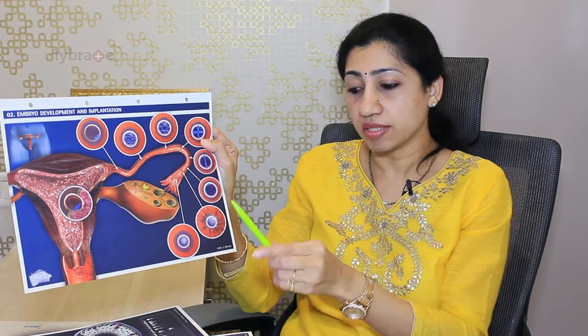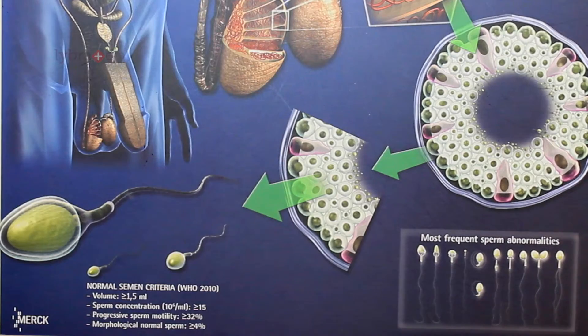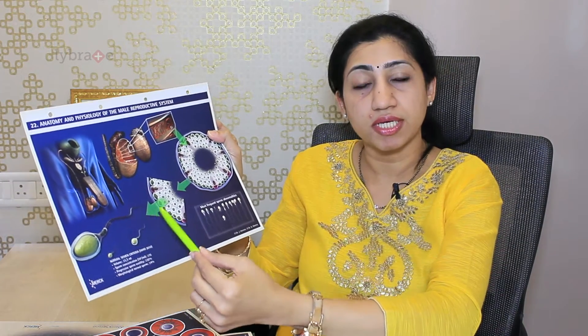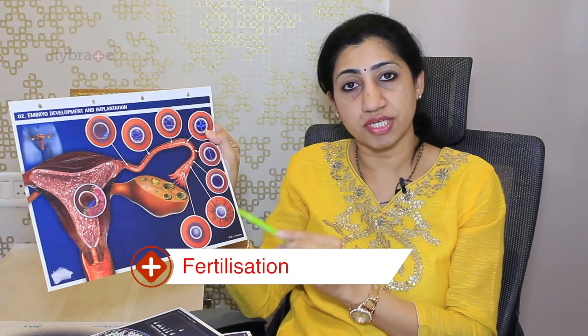The sperms move into the uterine cavity, come into the fallopian tubes, and have to reach the other part of the fallopian tube — it is at this point that the sperms reach the egg. There are certain criteria for normal semen. The volume should be at least more than 1.5 ml in the ejaculate, the sperm count should be more than 15 million per ml, and because of motility there should be active motility of at least more than 30 percent. Once the sperm enters the egg, the process is called fertilization, and the egg and sperm fuse to form an embryo.